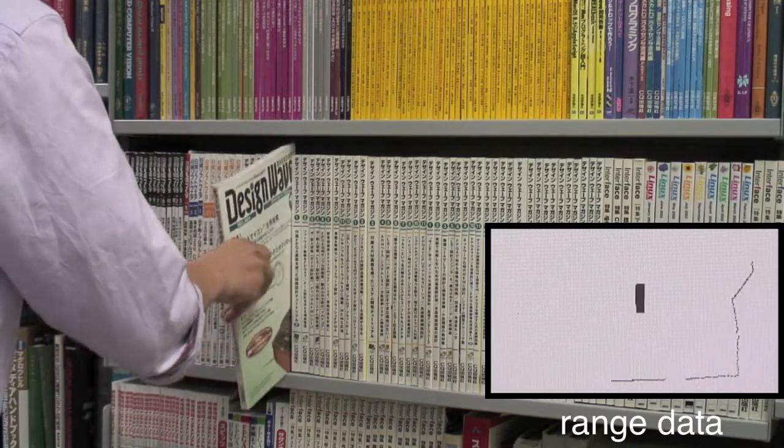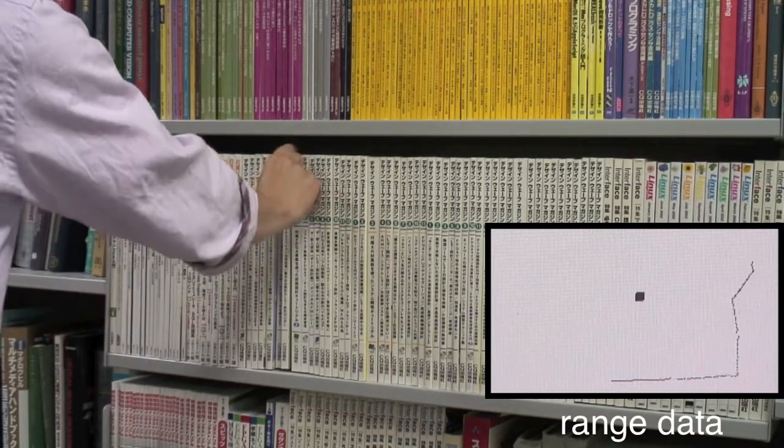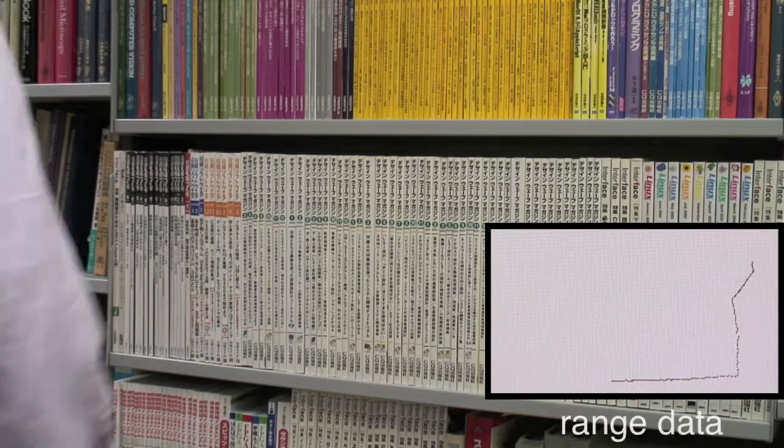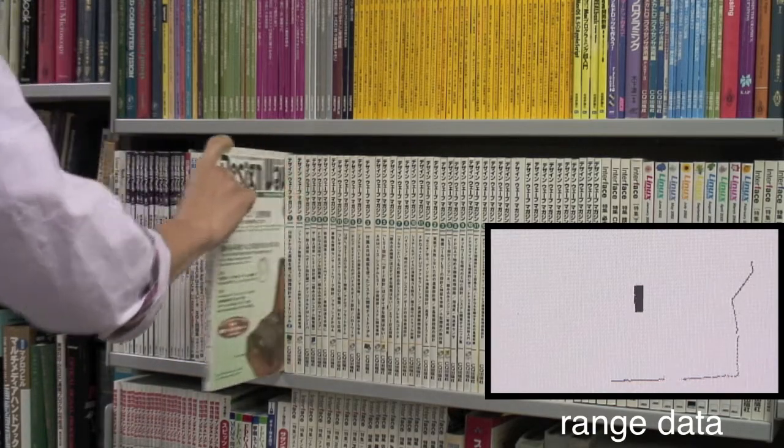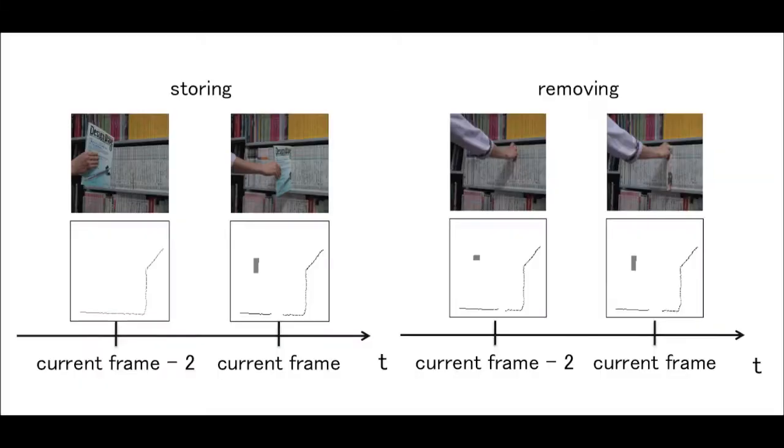After detecting that a book has crossed the sensitive plane, the system discriminates whether it is stored in or removed from the bookshelf. To achieve this, the system refers to past background subtraction results. If there is no object crossing the sensitive plane in past data, the system decides that the book is being stored in the bookshelf. Otherwise, it decides that the book is being removed.